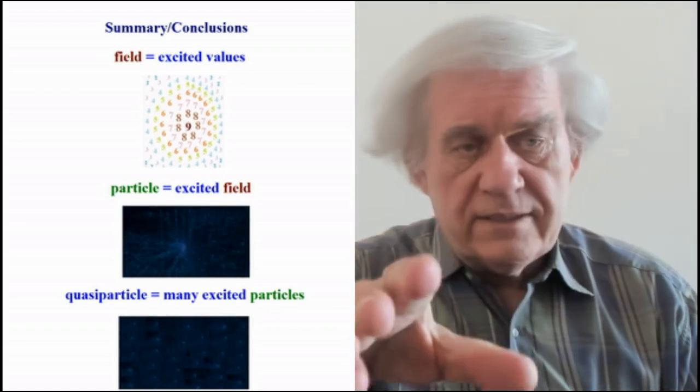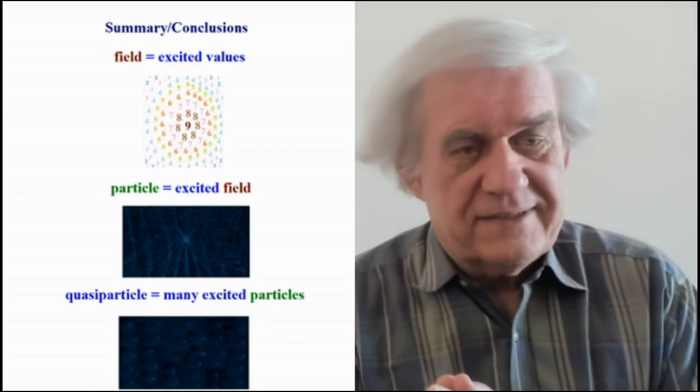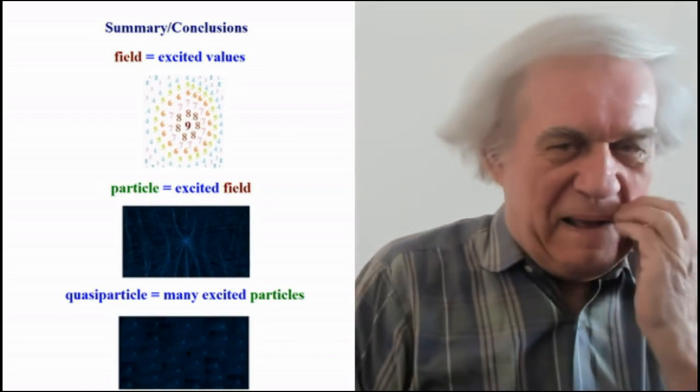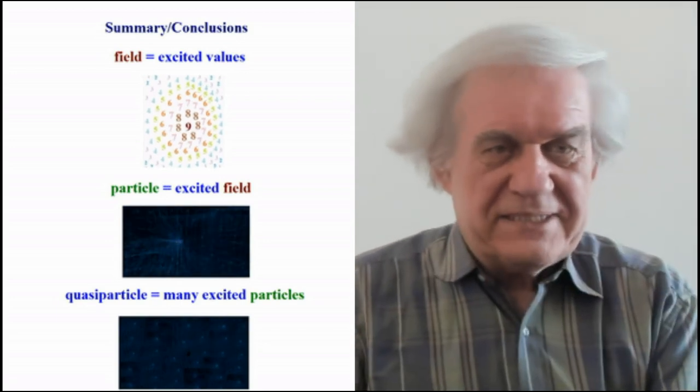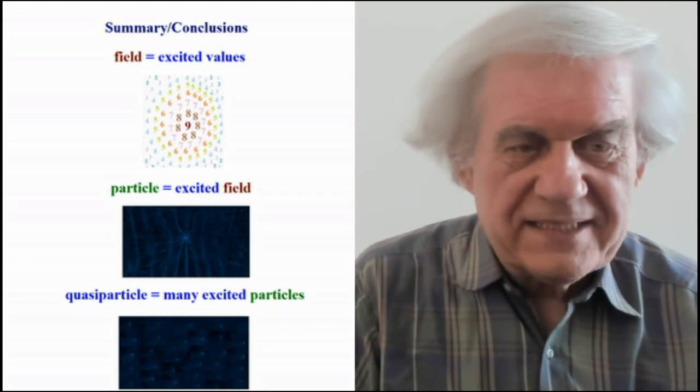A quasiparticle, whatever. And so here's a summary of that, the conclusions. You have the field. What is it? Excited values. What is a particle? It's an excited field. What is a quasiparticle? Well, it's many excited particles. So now you know what all these things are. You know what a quasi is. Quasi-quasis. So that's it.